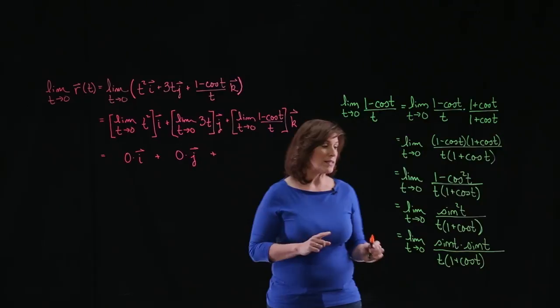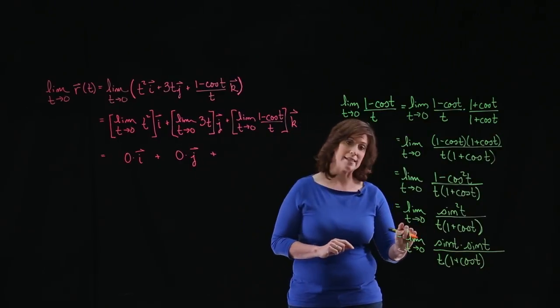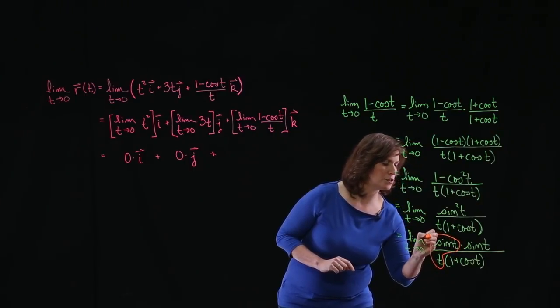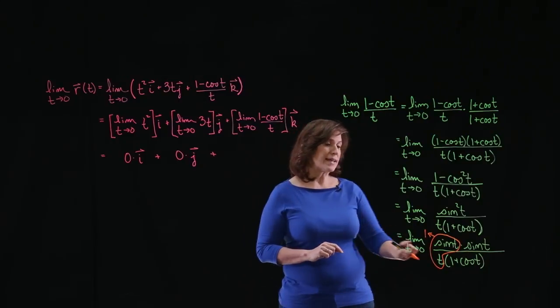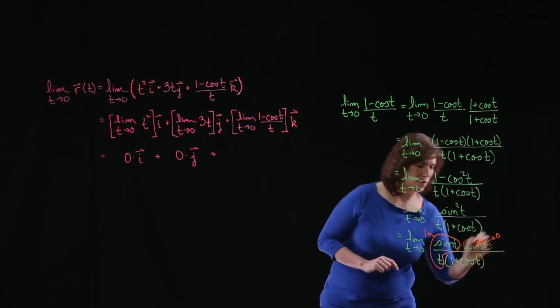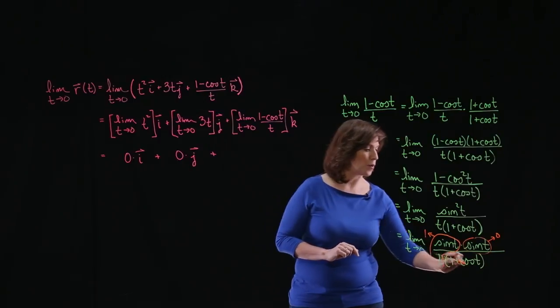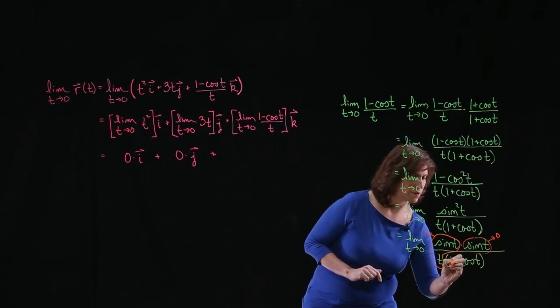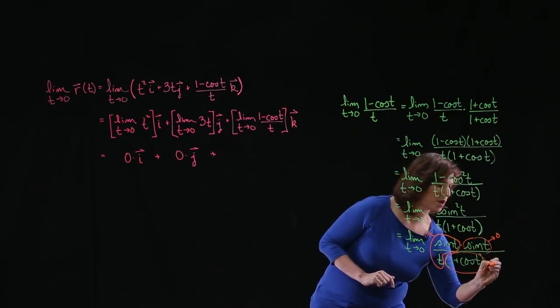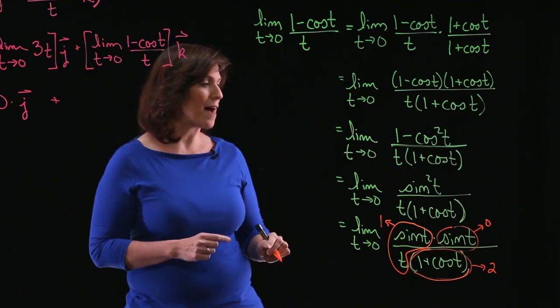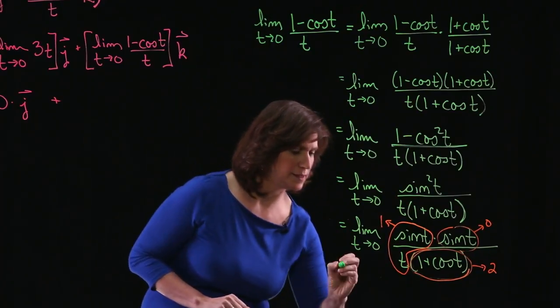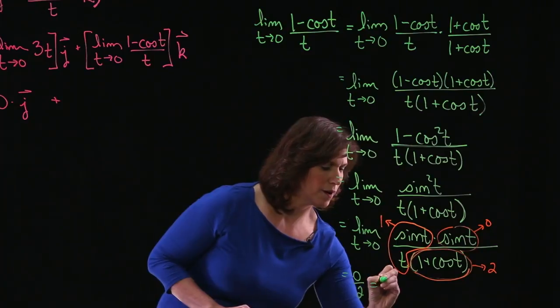Now if you remember the squeeze theorem, one of the results that we discovered was that as t approaches 0, the sine of t over t approaches the value 1. And as t approaches 0, sine of t goes to 0. And 1 plus cosine of t is going to go to 2. This piece is going to 2. So what do I have? In the numerator, I have 1 times 0 all over 2, which leads to 0 over 2 or 0.